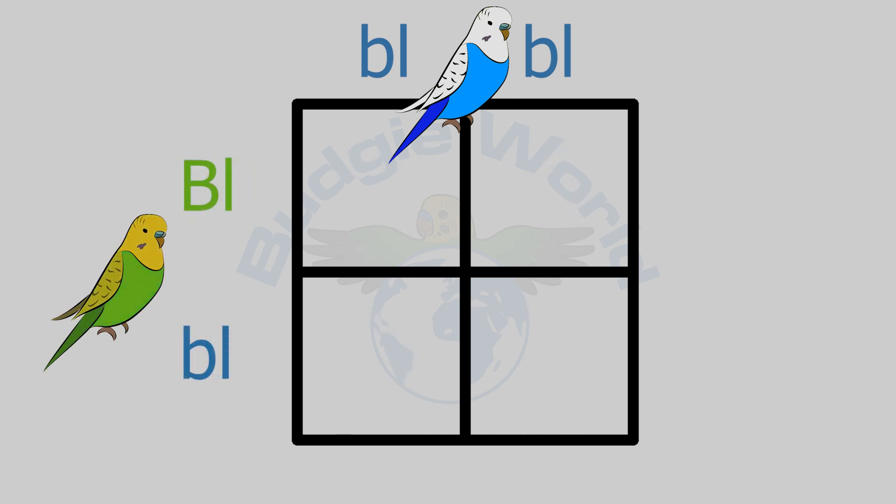It doesn't even matter which result you're looking for — all you need to watch for is budgies with yellow that spreads to the body rather than being contained to the face, and that should be 100% of offspring in the double factor type 2 case. The moment you get a normal or only yellow-faced budgie without spread to the body, that confirms it is single factor yellow face type 1.